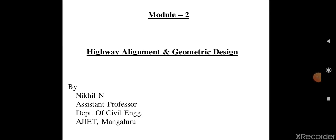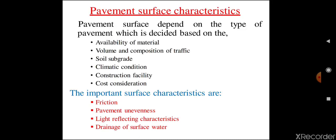Hello everyone, this is Nikhil N, assistant professor, Department of Civil Engineering, AJT Mangalore. Today I am making this video to discuss about highway alignment and geometric design. Firstly, let us start with pavement surface characteristics. So what are the characteristics of a pavement or a pavement surface? Pavement surface depends on the type of pavement, which is decided based on the availability of material, volume and composition of traffic, soil subgrade, climatic condition, construction facility, and cost of construction.